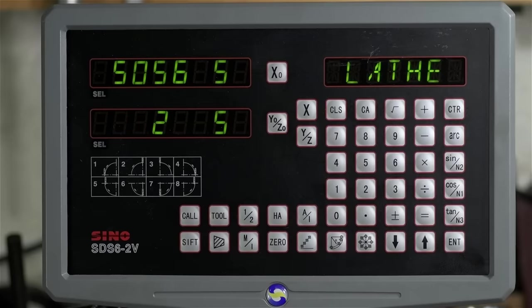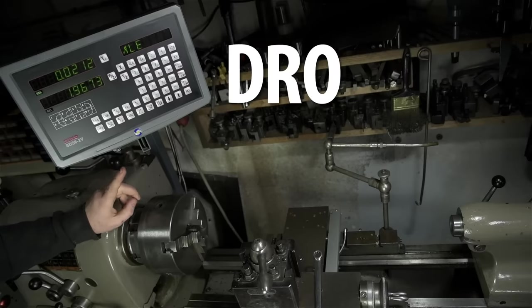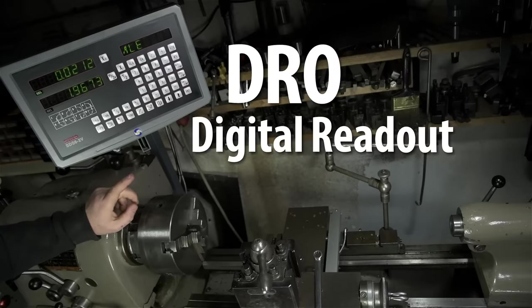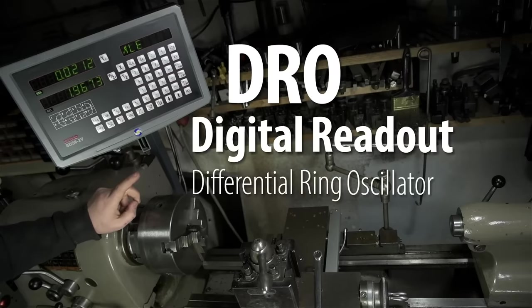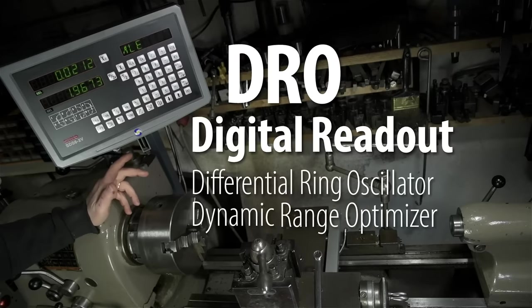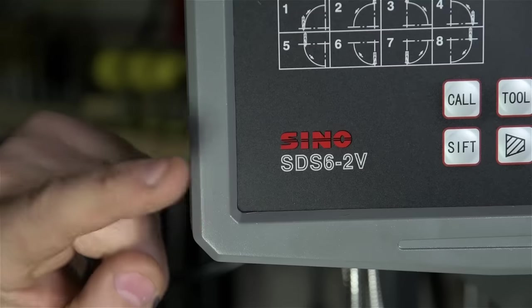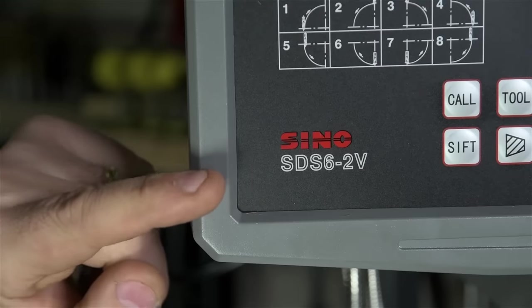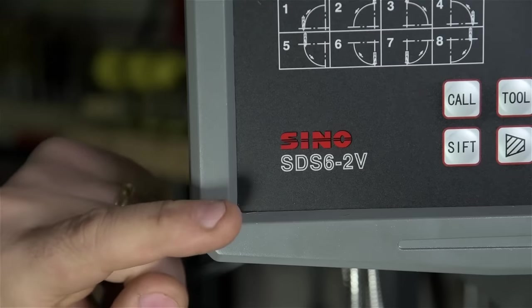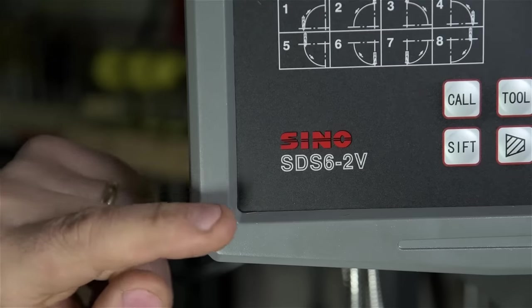Welcome to the future. Welcome to the year 2000. This is a DRO, or digital readout, not to be confused with a differential ring oscillator, a dynamic range optimizer, or a dielectric resonance orbiter, all of which my lathe already had, obviously. This happens to be a Sino SDS6 two-axis readout.